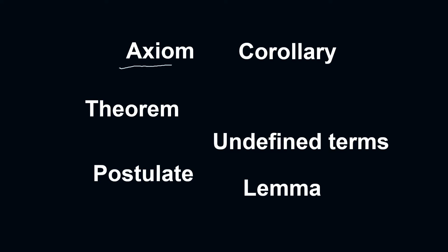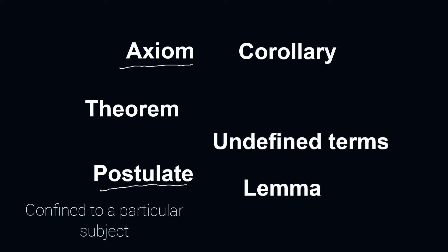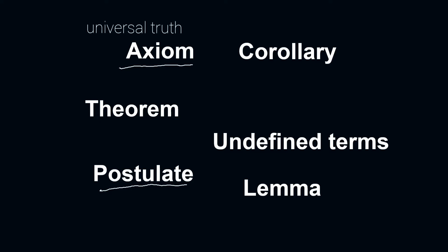Axiom and postulate have similar meanings. It means that these propositions are accepted to be true, even if we don't have a proof. Today, the word axiom and postulate are used interchangeably. But in the development of geometry, the word postulate was used for an assumption confined to a particular subject, for example, geometry. Whereas, when we speak of axiom, it denotes a universal truth, a more general assumption that is applied to all mathematics.